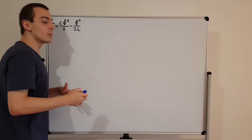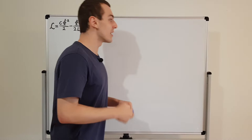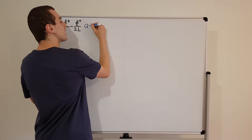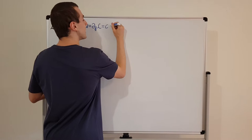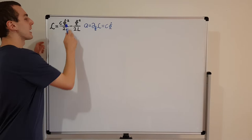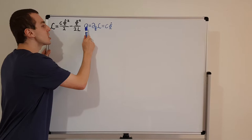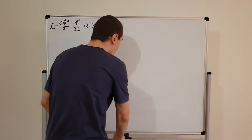Now let's write down the canonically conjugate coordinate. This would be momentum if we were dealing with position, but it's not momentum in this case — it is the charge, denoted by capital Q. This canonically conjugate coordinate is equal to the partial derivative with respect to phi dot of the Lagrangian, and that is equal to C times phi dot. I just used the power rule and the two cancelled with the half.